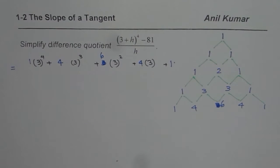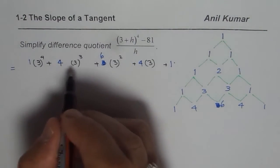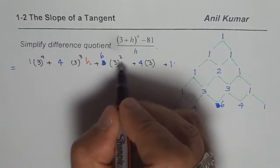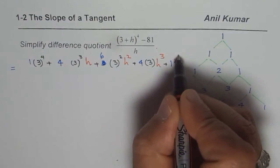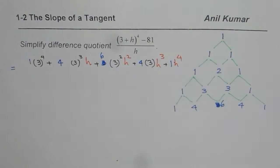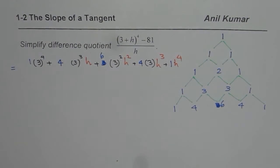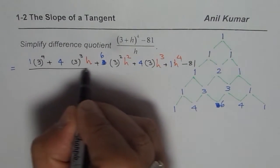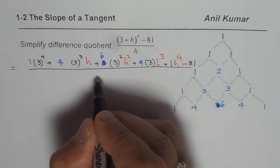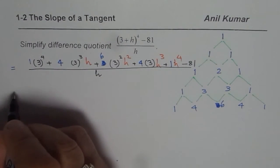Now the other terms which fit in are degrees with h. So here it is h to the power of 0, which is 1. In this case, it is h to the power of 1, then h to the power of 2, h to the power of 3 and h to the power of 4. So that is the expression which you get for 3 plus h to the power of 4. And we do have minus 81, divided everything by h.